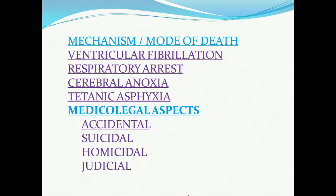What is the mechanism or mode of death in electrocution? Death may occur due to ventricular fibrillation and other cardiac arrhythmias. Death may occur because of knocking out of the respiratory center. Death may occur due to cerebral anoxia. Death may also occur due to spasms of the chest muscles — tetanic asphyxia — where spasms of the chest muscles prevent air and oxygen from entering the airways, leading to death due to asphyxia.